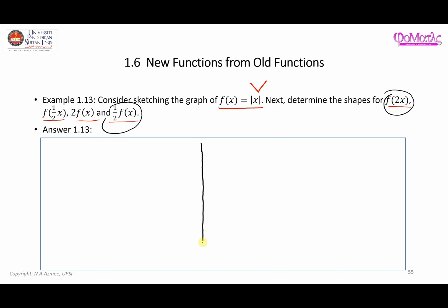So let me start off by drawing the vertical axis and horizontal axis. This is my x and this is my f(x). For clarity, we should properly label and consider the spacing and coordinates, so this will be 1, 2, 3, 4 on each side with equal distance. The point is going to be somewhere here.